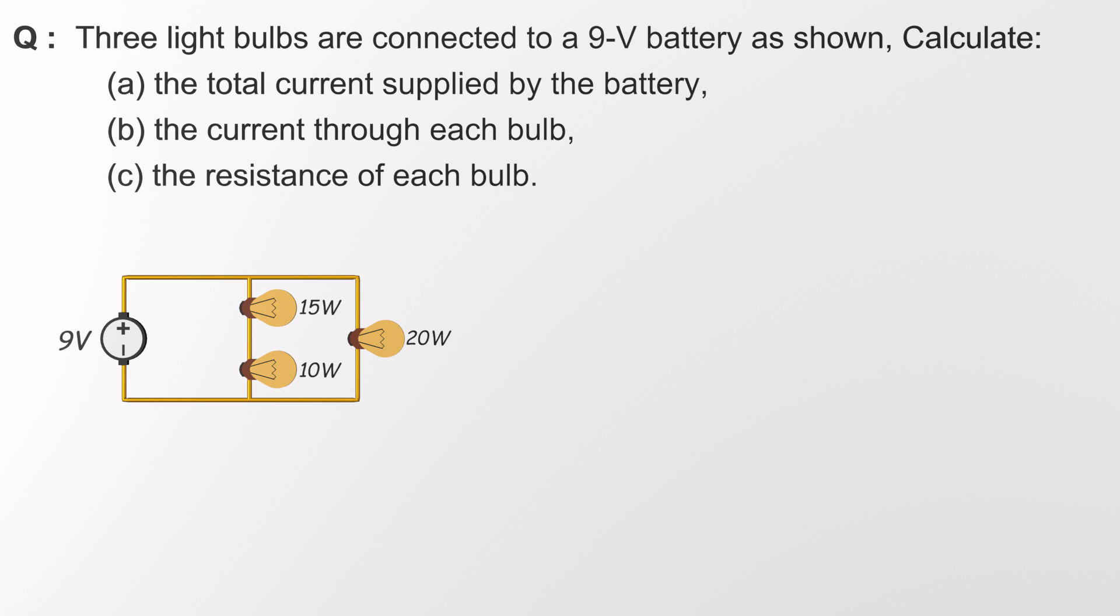We're going to calculate three things: the total current from the battery, the current through each bulb, and the resistance of each bulb. Even though we're only told the power consumed by each bulb, don't panic.